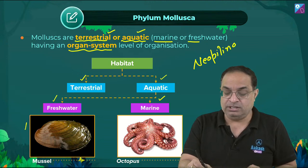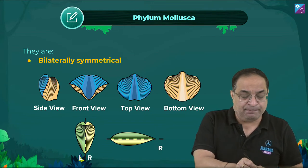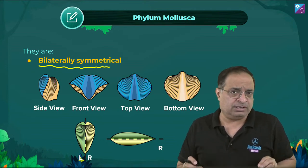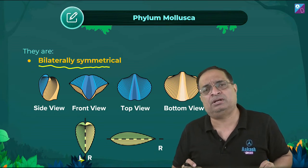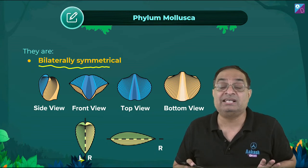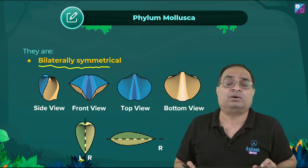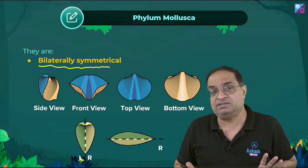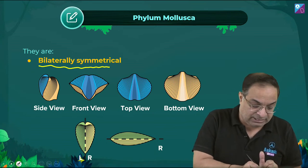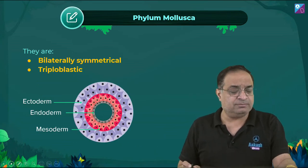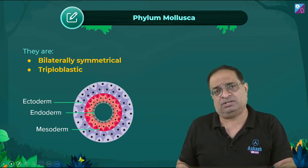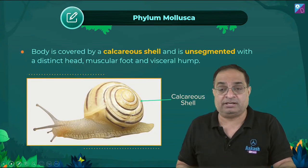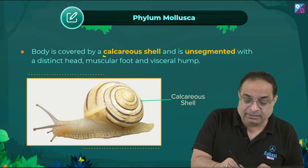Symmetry is bilateral in most mollusks, though some (like gastropods) become asymmetrical due to torsion during development. They are triploblastic and coelomate — true coelom is present from Annelida onwards. The body is covered by a calcareous shell secreted by the mantle. The body is unsegmented (with Neoplina as the exception). The body is divisible into head, muscular foot, visceral hump, and mantle. The muscular foot is used for swimming, digging, and crawling.